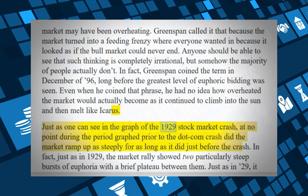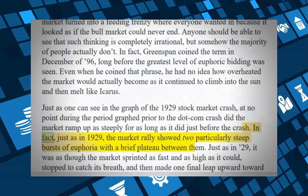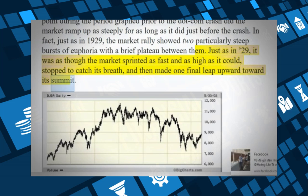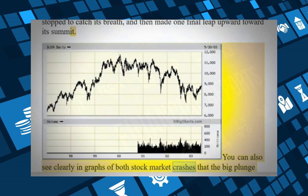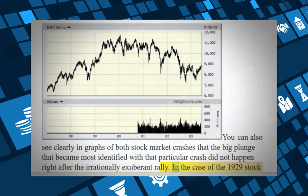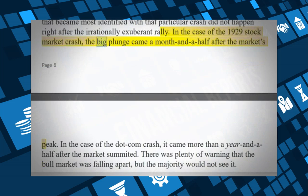Just as in the graph of the 1929 stock market crash, at no point prior to the dot-com crash did the market ramp up as steeply for as long as it did just before the crash. Just as in 1929, the market rally showed two particularly steep bursts of euphoria with a brief plateau between them — as though the market sprinted as high as it could, stopped to catch its breath, and then made one final leap toward its summit. In 1929 the big plunge came a month and a half after the market's peak; in the dot-com crash, it came more than a year and a half after the summit.